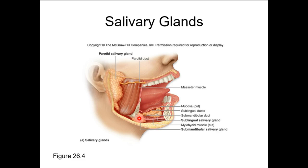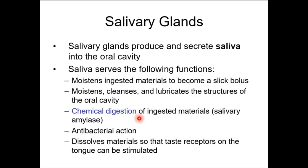Salivary amylase initiates the breakdown of carbohydrates. Digestion is defined as chemically breaking things down, which means digestion actually begins in your mouth. When you eat something sweet and then 30 minutes later your mouth tastes kind of sour — that's a breakdown product of amylase called amylopectin. You can prove to yourself that that chemical reaction is happening. Mucus cells secrete mucin, while serous cells secrete salivary amylase along with ions and lysozyme.